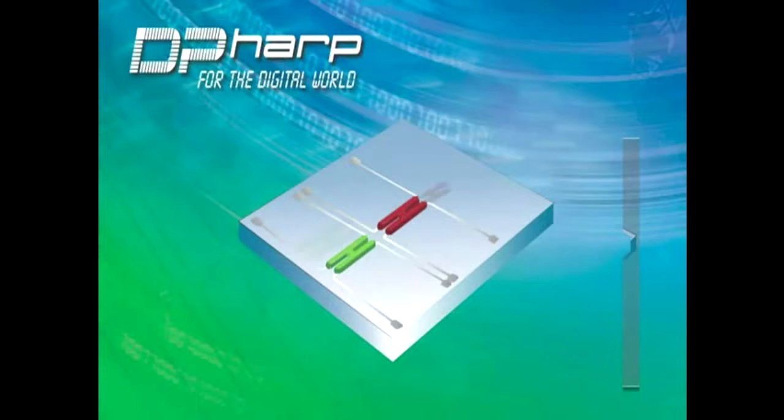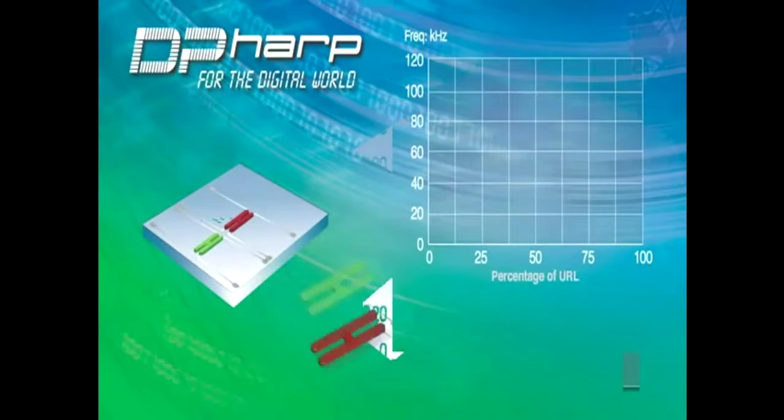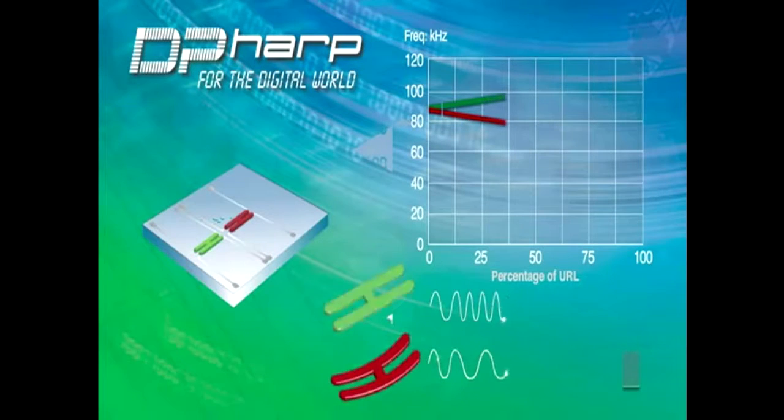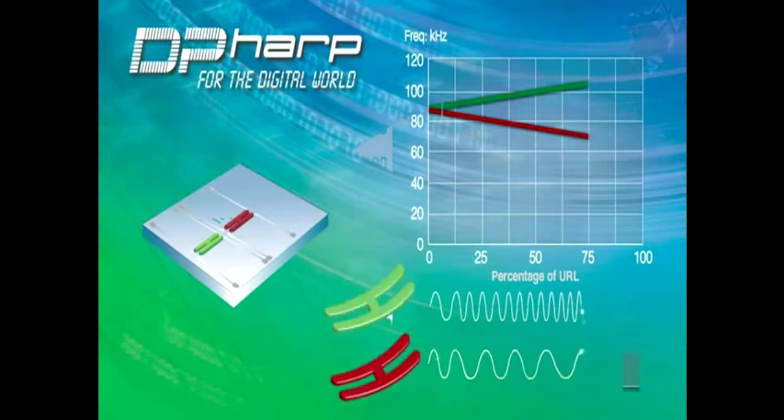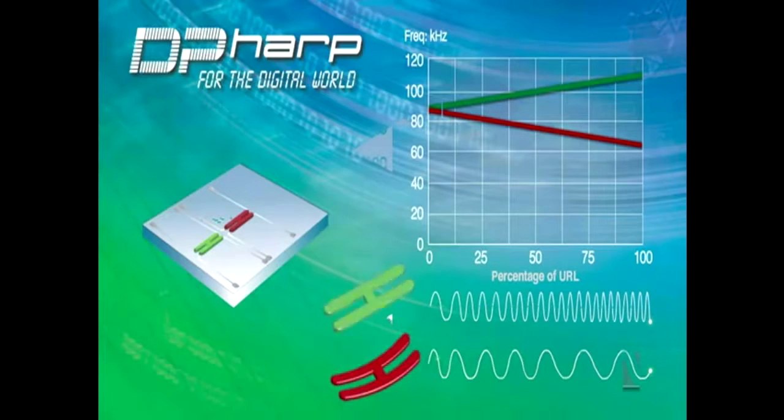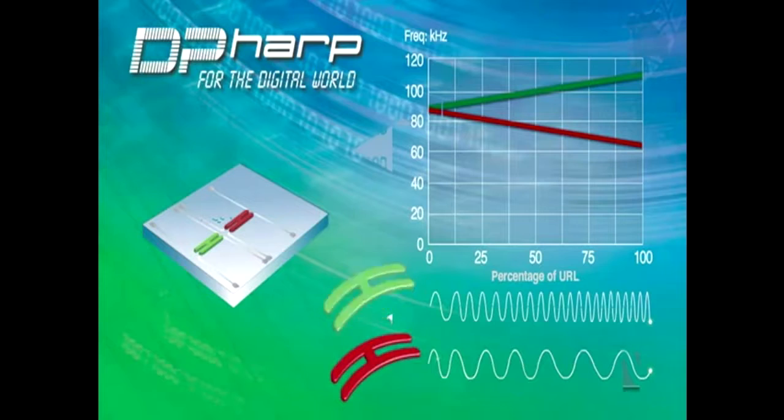The sensor incorporates two resonators which vibrate at a known frequency. When pressure is applied, the frequency of one resonator increases while the other decreases due to the sensor design. By monitoring these frequencies digitally, both differential and static pressure can be measured at the same time.